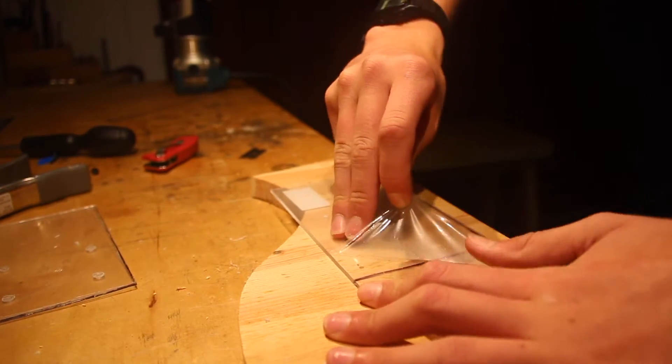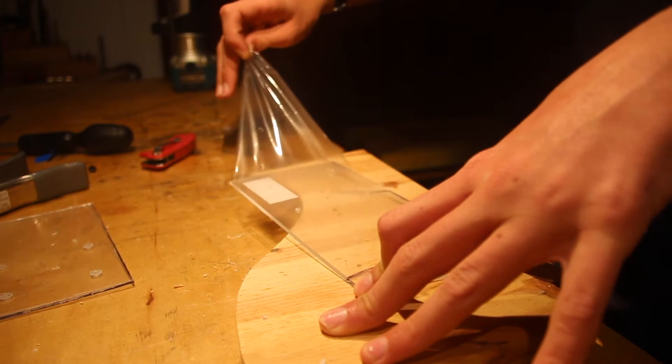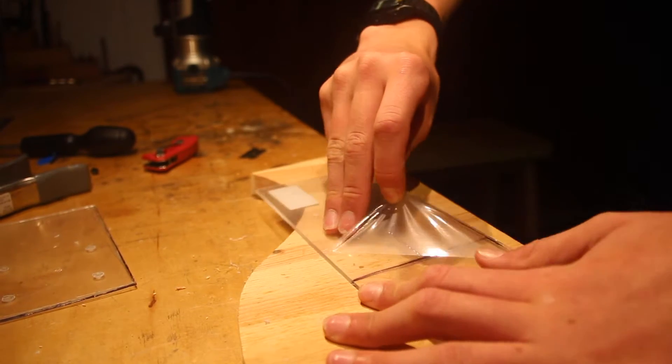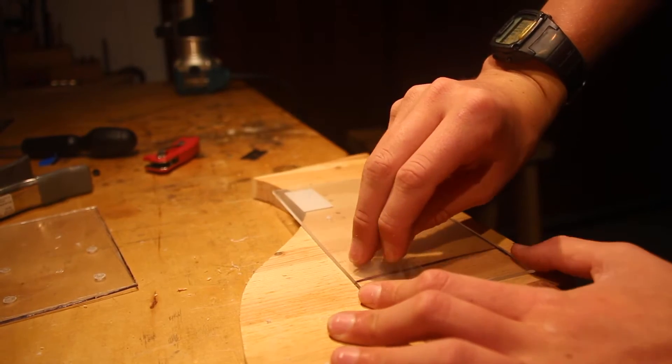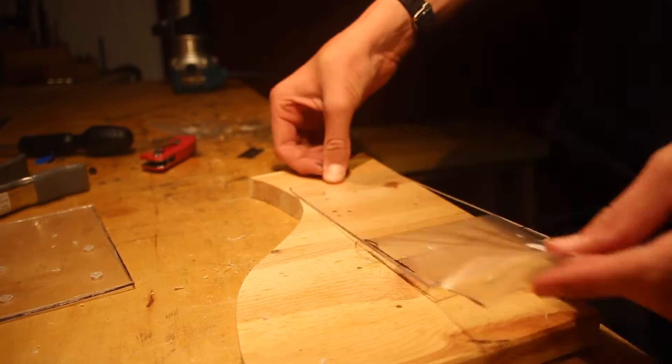Here I'm peeling off the protective layer, and this is one of the most satisfying things in the world. It's kind of like peeling off the protective screen on your phone when you first get it brand new. It's just amazing. I would love to buy plexiglass just to peel off the protective coating.